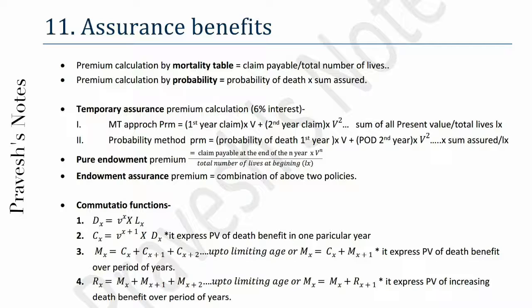Pure endowment premium equals claim payable at the end of the n-th year × vⁿ, divided by total number of lives at beginning, lx. Endowment assurance premium equals a combination of the above two policies.